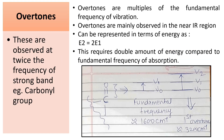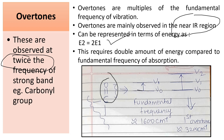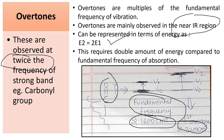Overtones are the multiples of the fundamental frequency of vibration. They are observed at twice the frequency of a strong band and are found mainly in the near IR region. Their energy can be represented as E2 = 2E1. The fundamental transition is V0 to V1, giving a peak around 1600 cm⁻¹. But some molecules skip V1 and jump directly to V2, producing a peak around 3200 cm⁻¹ — double the original band — requiring double the energy. This peak is called an overtone.